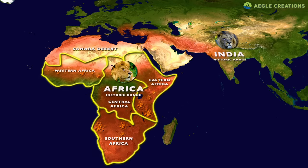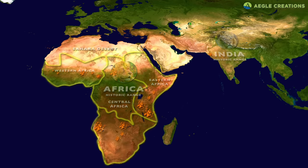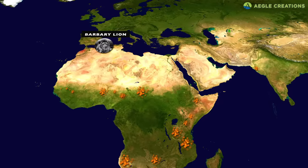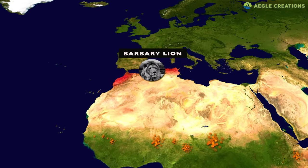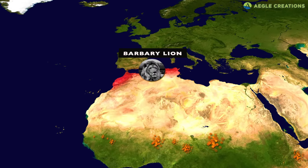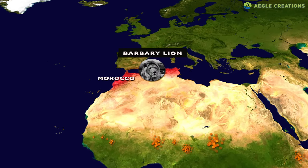The famous Barbary, or Atlas lions, were once found in the deserts and mountains of northern Africa, ranging from Morocco, Algeria, to Tunisia.